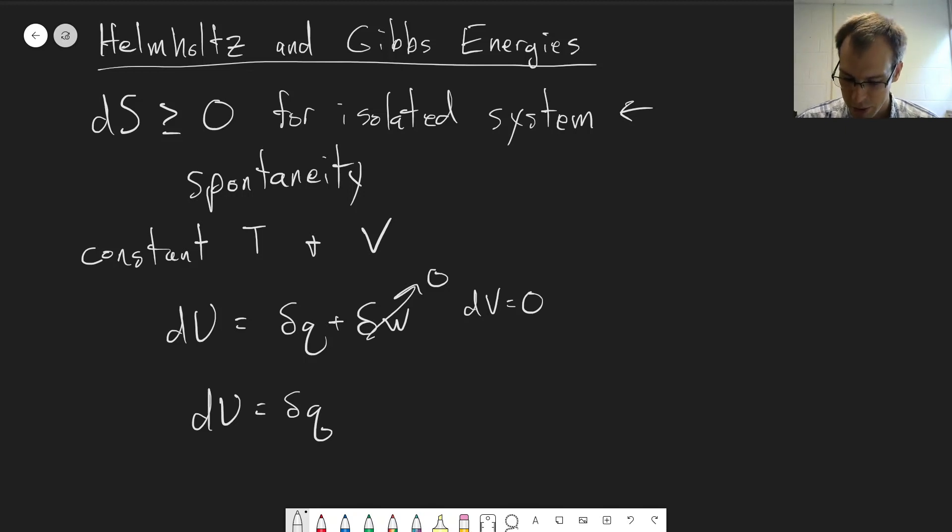And now we can go ahead and bring in our dS. We know that dS is equal to dq reversible divided by T, and that has to be greater than or equal to zero.